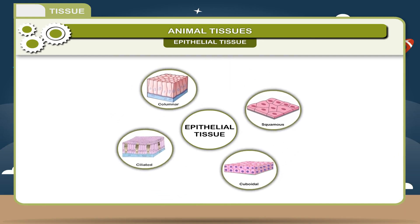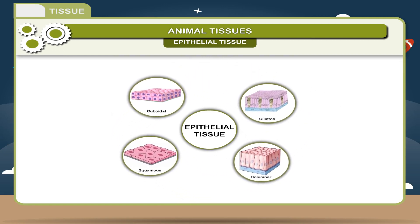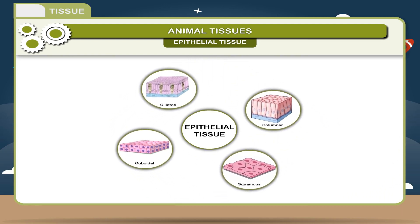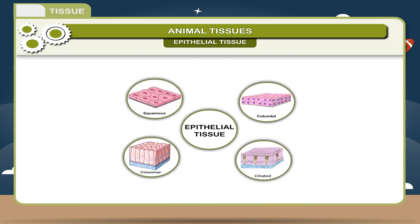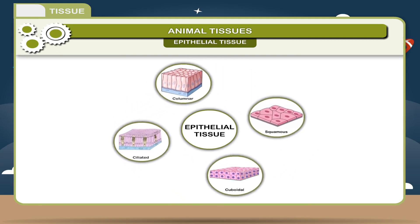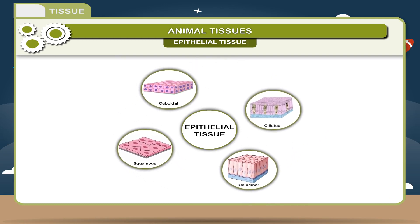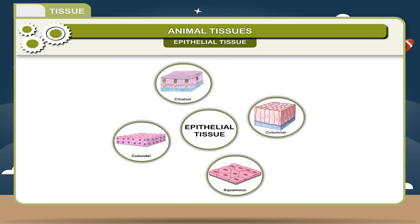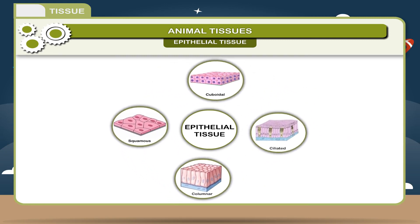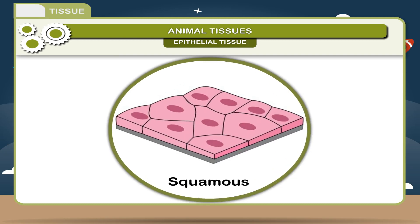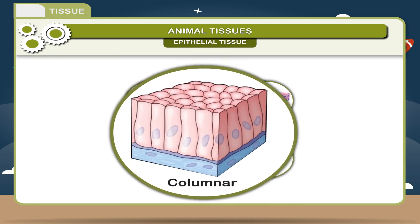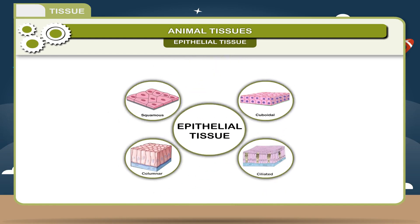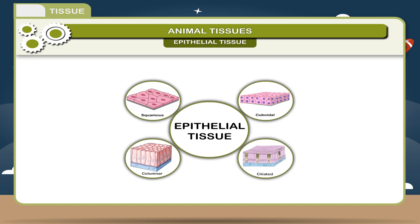Structure: The cells of epithelial tissue are of different shapes depending upon their location and function. They may be flat, cuboidal, or columnar. These cells are tightly packed and there is no intercellular space. On the basis of the shape of the cells, the epithelial tissue is classified into four types: Squamous epithelium, ciliated epithelium, columnar epithelium, and cuboidal epithelium.